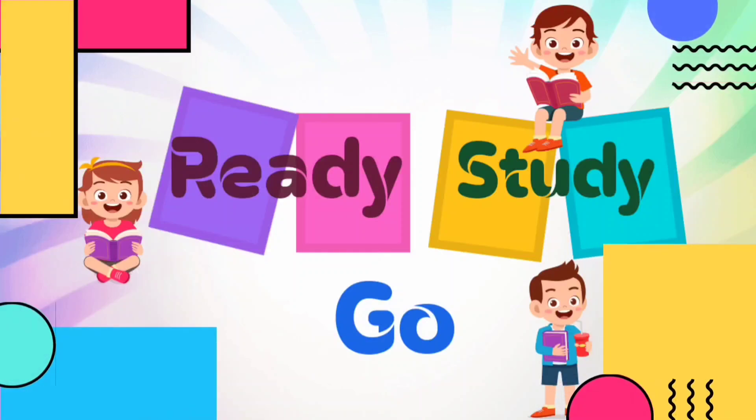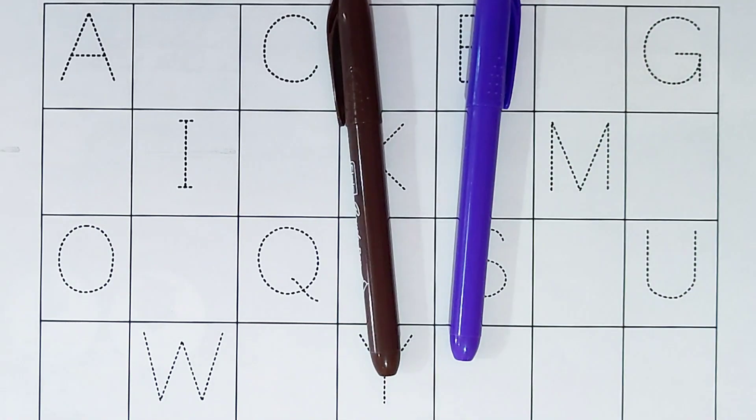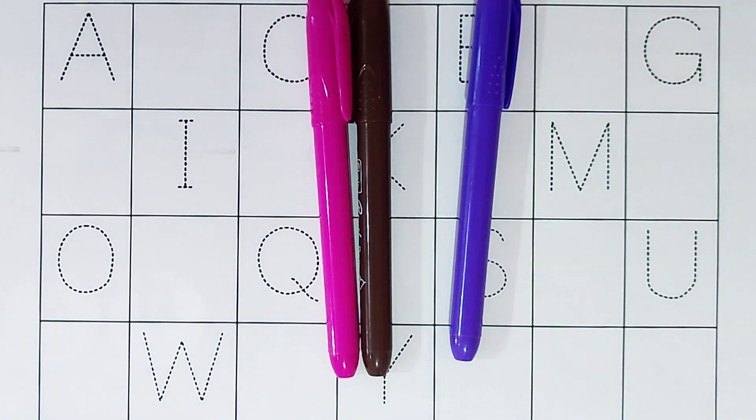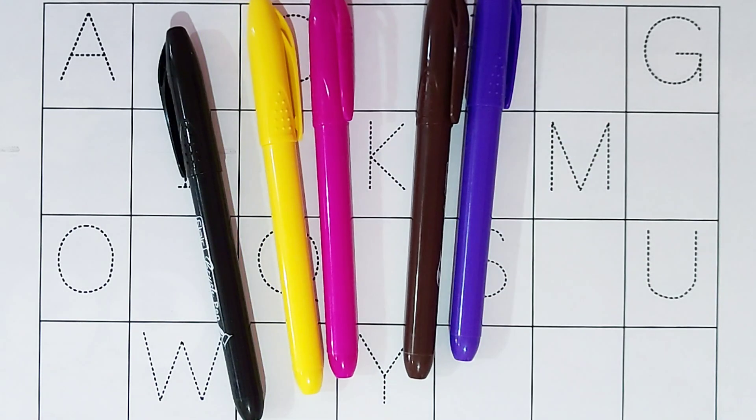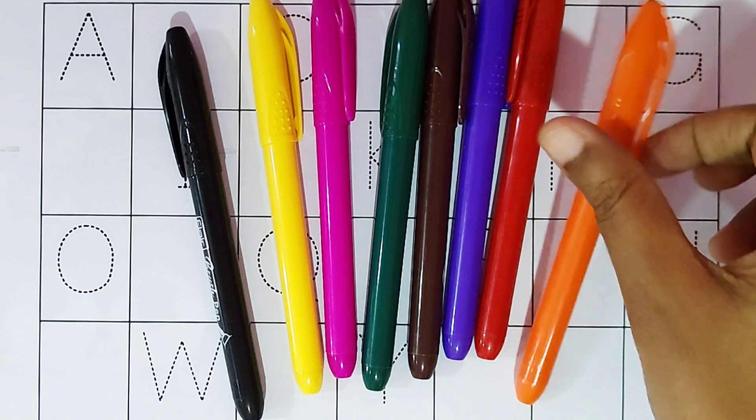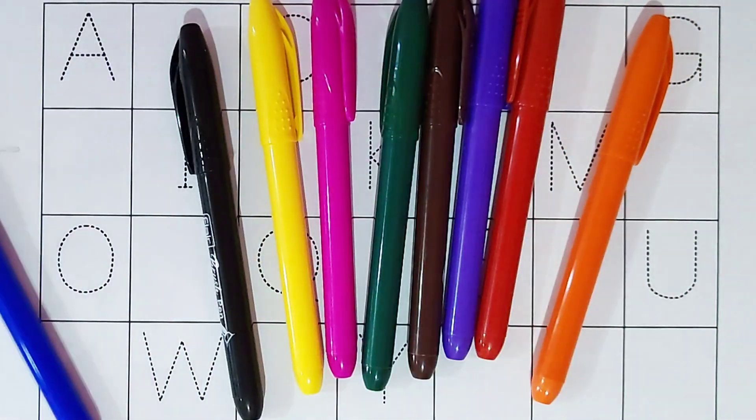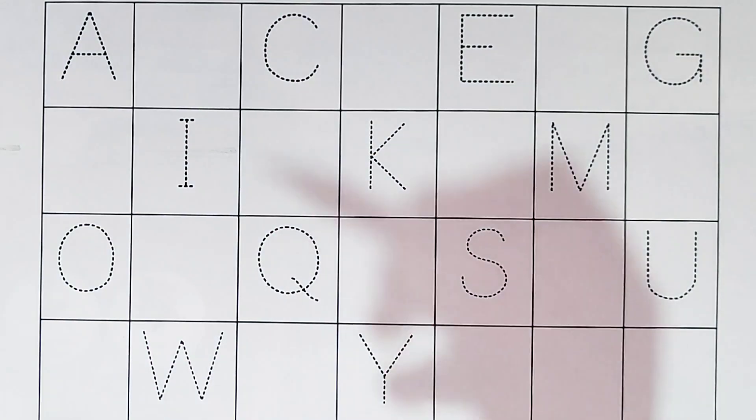Ready, study, go! Hi kids. Violet color, brown color, pink color, black color, yellow color, green color, red color, orange color, blue color. Today we can learn the alphabets from A to Z.